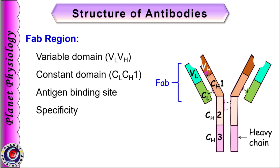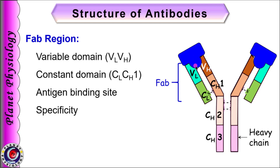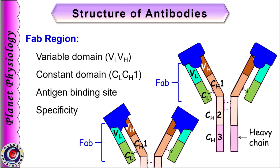The variable domain and CH1 domain of the heavy chain form the antigen binding fragment, abbreviated as FAB, which stands for antigen binding fragment. It has the antigen binding site which imparts specificity to the antibody. The variable region acts like a lock which can be accessed by a particular key, meaning it is activated by only a particular antigen. Other types of antigens cannot activate this particular antibody, but they will activate another antibody which has a complementary binding site for them.